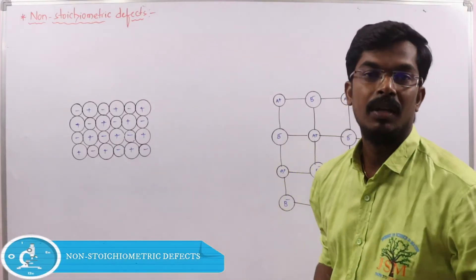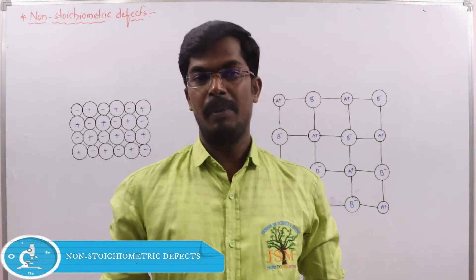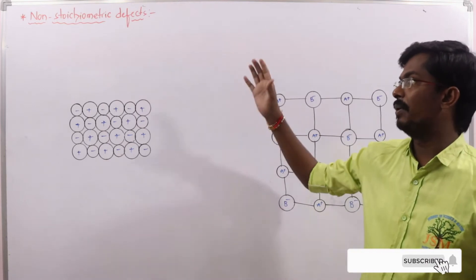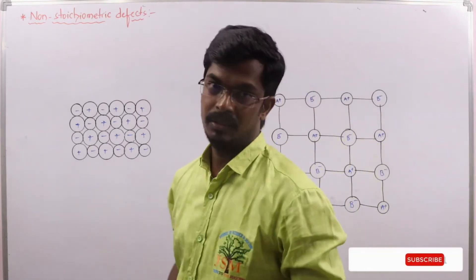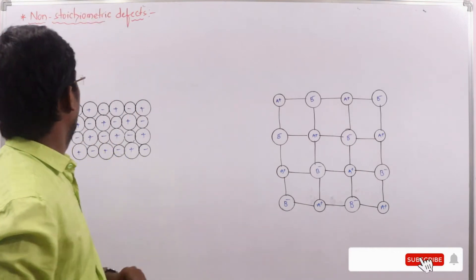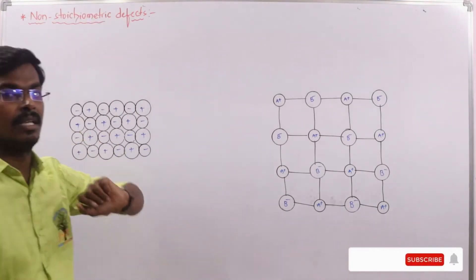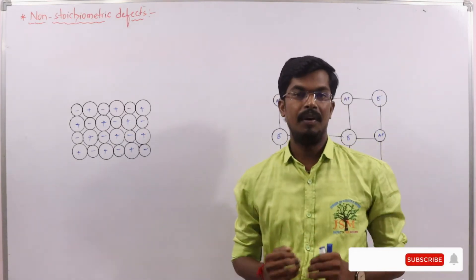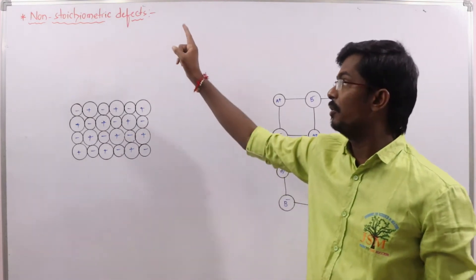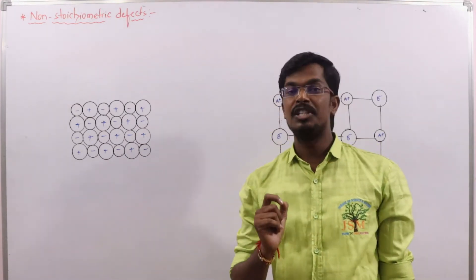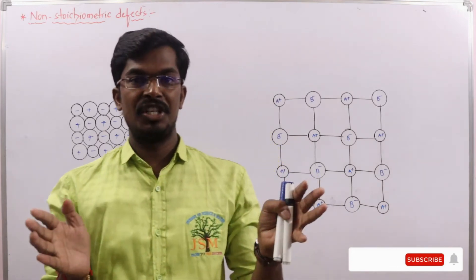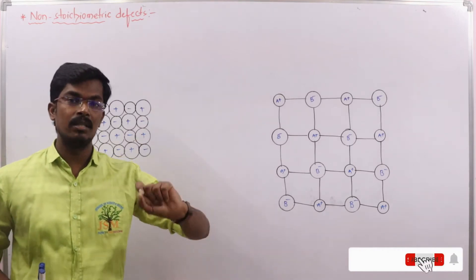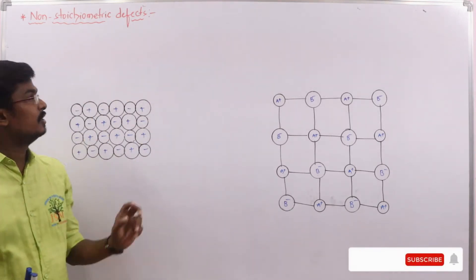Welcome to JSM. In the previous class I explained stoichiometric defects. Now in this session I am going to explain non-stoichiometric defects. Generally, if an imperfection causes the ratio of cations and anions to become different from the ideal chemical formula, we call that a non-stoichiometric defect.